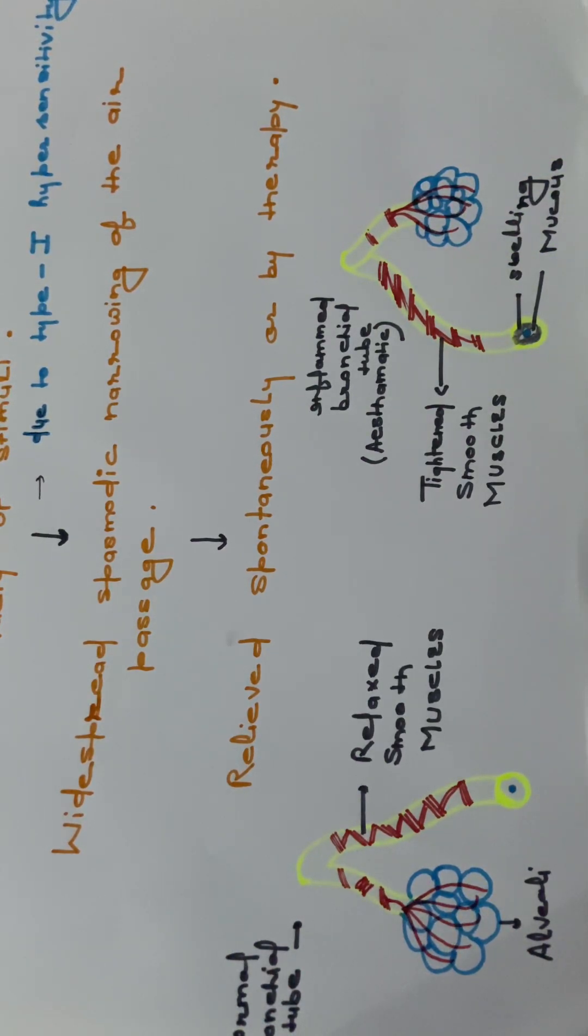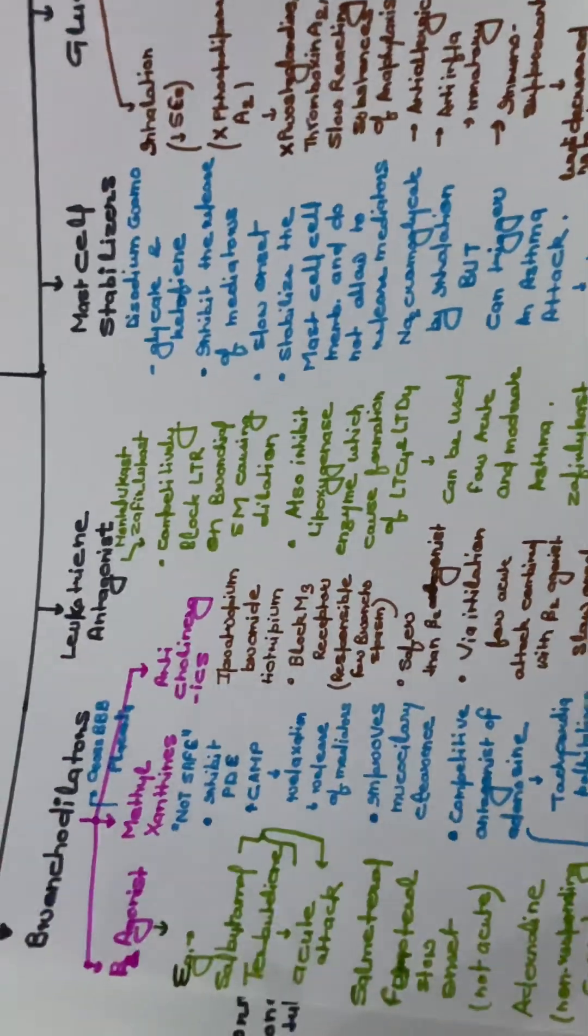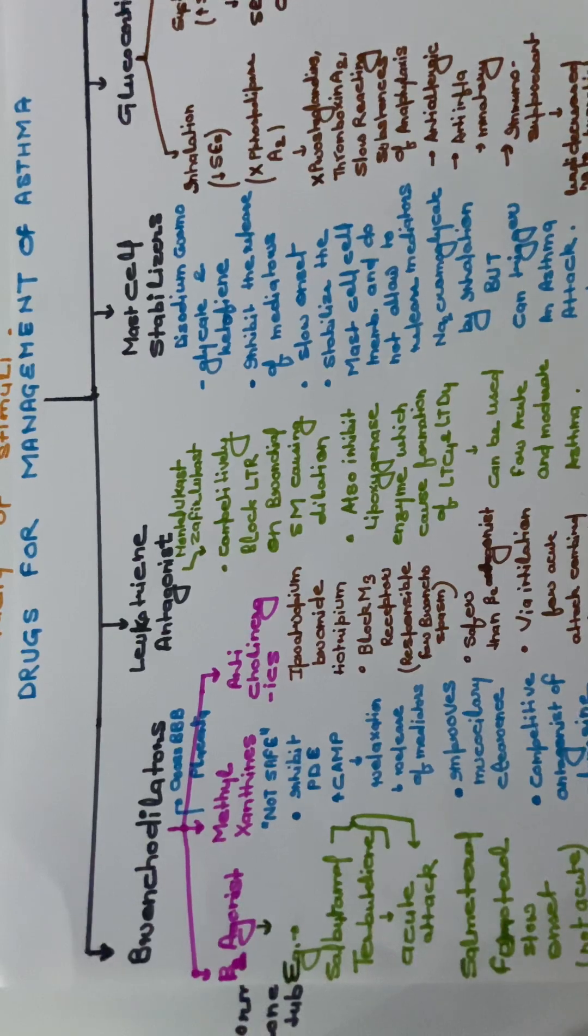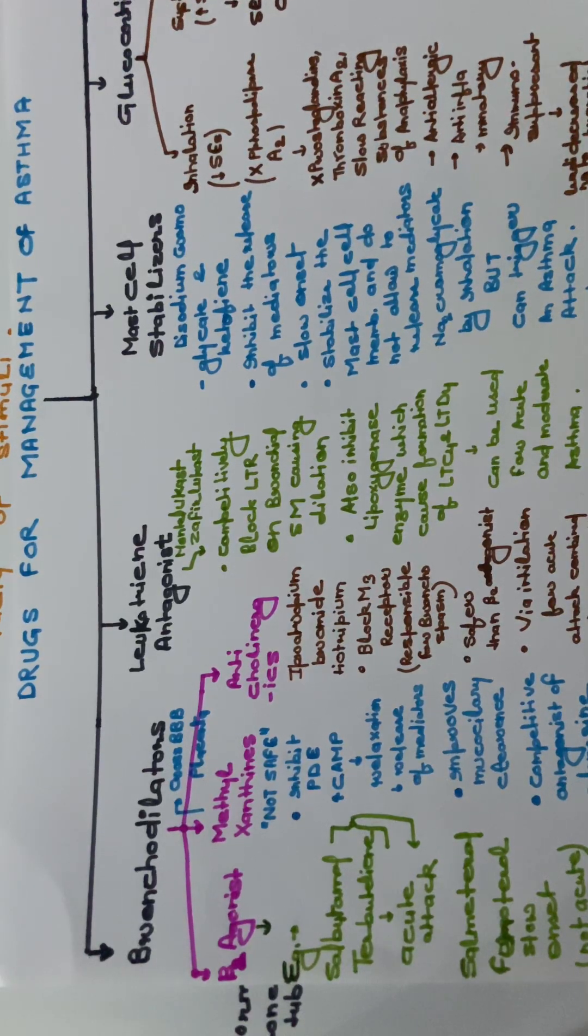So now let's see the management of drugs for asthma. We use the word management because asthma cannot be treated properly, it can only be managed. It is a genetic disorder or it can be acquired many times.